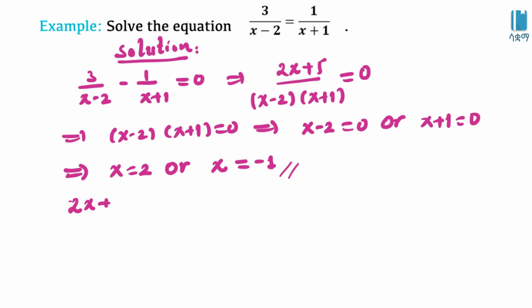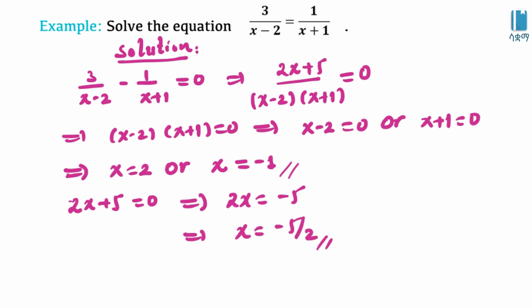Setting the numerator 2x plus 5 equal to zero gives 2x equals negative 5, so x equals negative 5 over 2. Since negative 5 over 2 is not equal to 2 or negative 1, it is valid. The solution set is x equals negative 5 over 2.